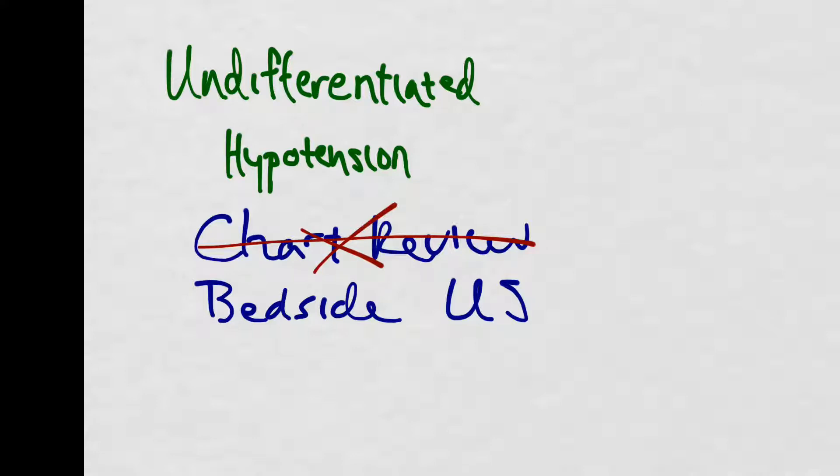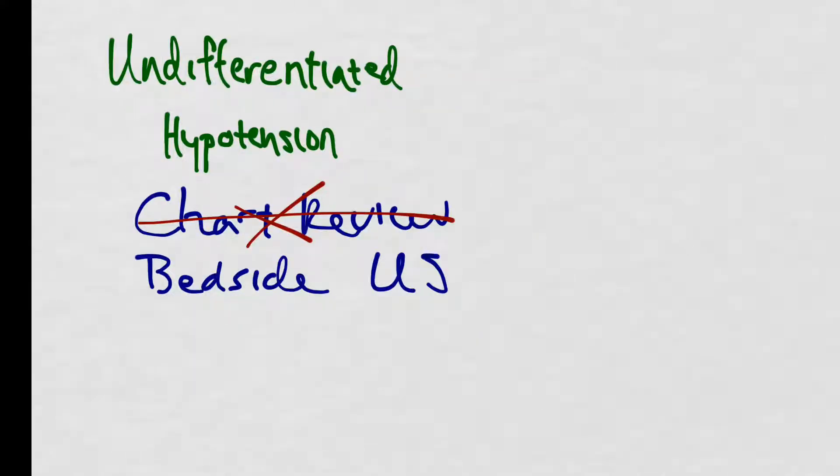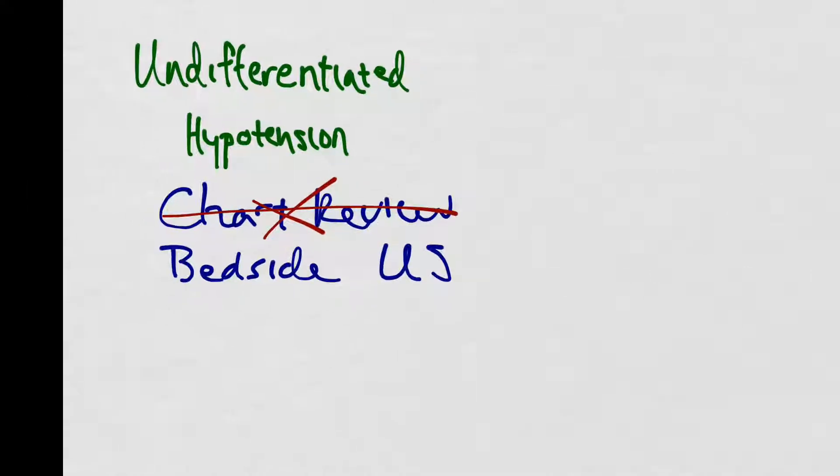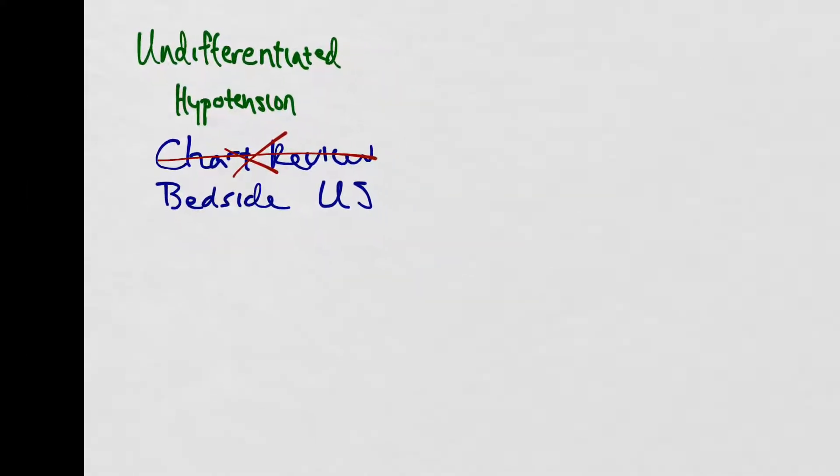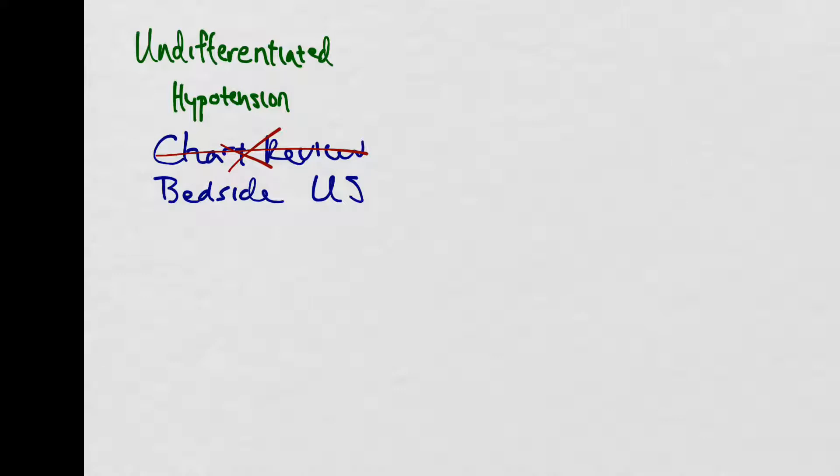After you're done going through this algorithm, you can then ask your patient some more questions and get a little bit more history, as well as go to the computer and do a little bit of chart biopsy. But at least you know that you've assessed the patient for specific life-threatening causes that could be immediately reversed via interventions. Now that you're at the bedside and you've resisted the urge to ask your patient a thousand questions, let's go over step one.